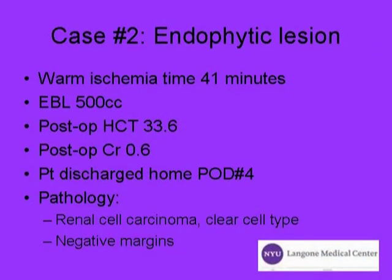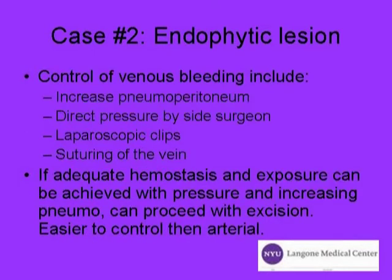Warm ischemia time is 41 minutes, the estimated blood loss is 500 cc, and the patient was discharged home post-op day 4. Controlled venous bleeding can be achieved with increasing the pneumoperitoneum, direct pressure by the side surgeon, laparoscopic clips, or suturing the vein. Excision of the lesion can be completed if hemostasis can be achieved.